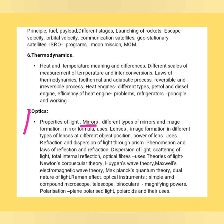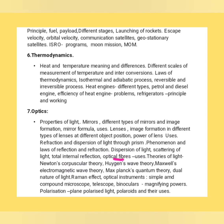Moving to optics: properties of light, different types of mirrors, image formation and mirror formula, uses of lenses, image formation at different positions, power of a lens, diffraction and dispersion of light, refraction, scattering, total internal reflection, optical fibre and its uses. Theories of light include Newton's corpuscular theory, Huygens' wave theory, Maxwell's electromagnetic wave theory, Max Planck's quantum theory, real nature of light, Raman effect, optical instruments — simple and compound microscope, telescope, binoculars, magnifying power — and polarization, plane polarized light, polaroids and their uses.